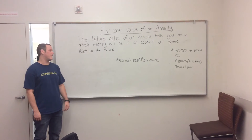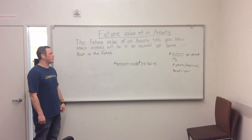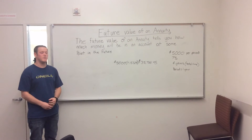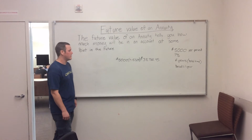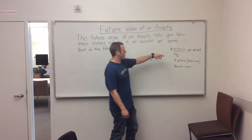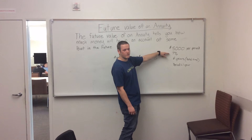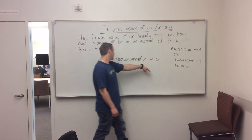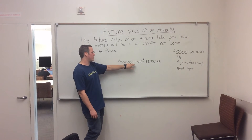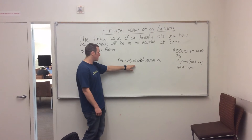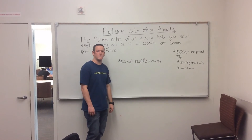Hi, my name is Brian Shawrock. Today I'm going to talk to you about the future value of an annuity. The future value of an annuity tells you how much money you will have in an account at some point in the future. For our example, we're using $5,000 at 7% for a total of six years. You multiply $5,000 by 7.15329 — that's from our chart — and that equals $35,766.45.